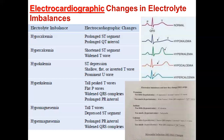A positive or negative deflection from the baseline indicates a specific cardiac event. Waves on an EKG include the P wave, Q wave, R wave, S wave, and T wave. Some EKGs also show a U wave.